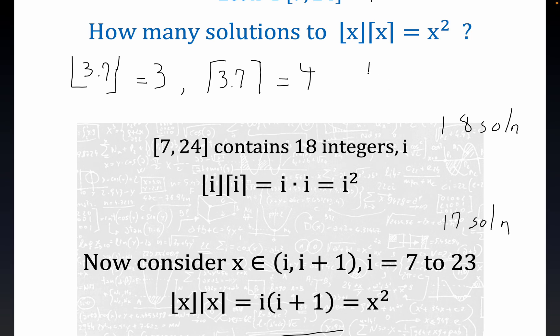So the total number of solutions is 18 plus 17 - does that add up to 35? So that's equal to 35, 35 solutions.